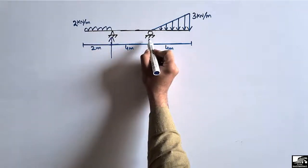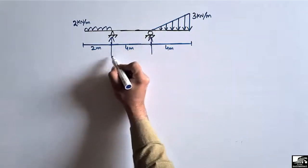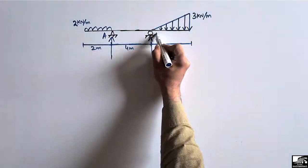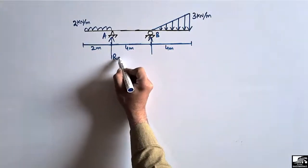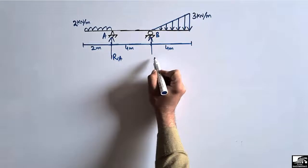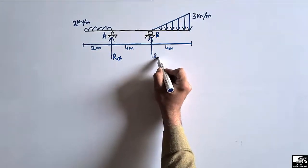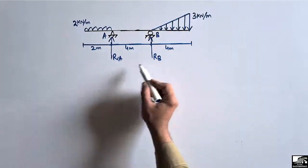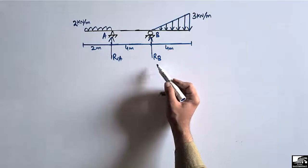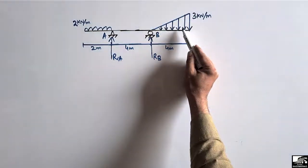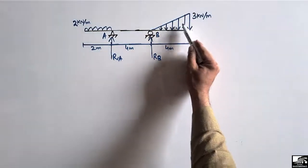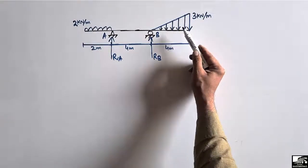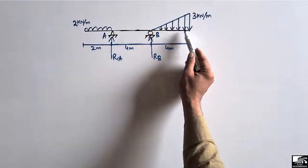Let's consider the support reactions for this beam. This is support A and this is support B, with reactions RA and RB. To find these support reactions, we first need to simplify the triangular load by converting it into a pointed or concentrated load.